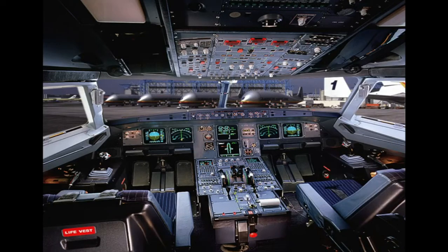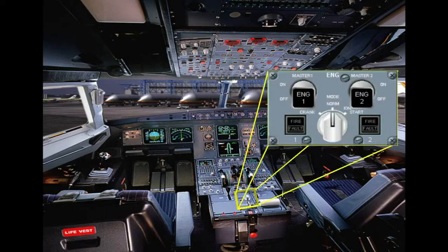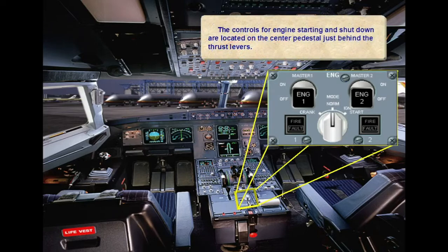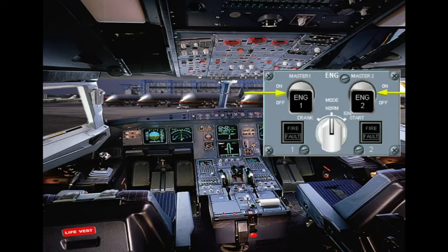The controls for engine starting and shutdown are located on the center pedestal, just behind the thrust levers. The engine master switch and the engine mode selector enable the pilots to start the engines automatically or simply dry crank them. Once the engines are running, the mode selector can also provide continuous ignition.